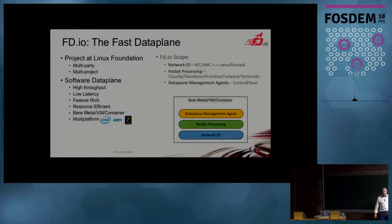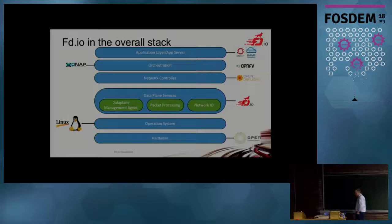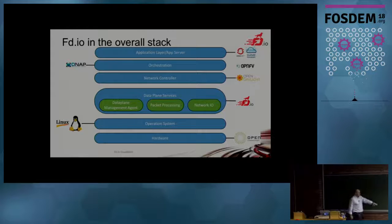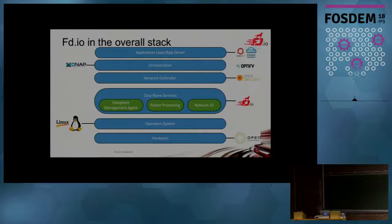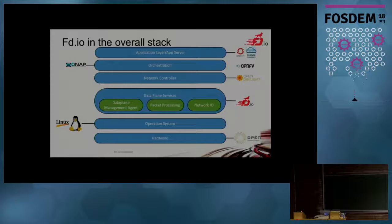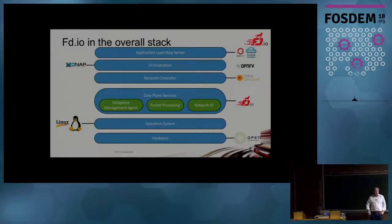VPP usually works on DPDK, but you also have NetPacket I/O on top of which it can sit. This project sits at the low layer in the stack — below OpenDaylight and OPNFV. VPP is the thing reading packets and forwarding packets, and that's the thing which needs to be really, really fast.